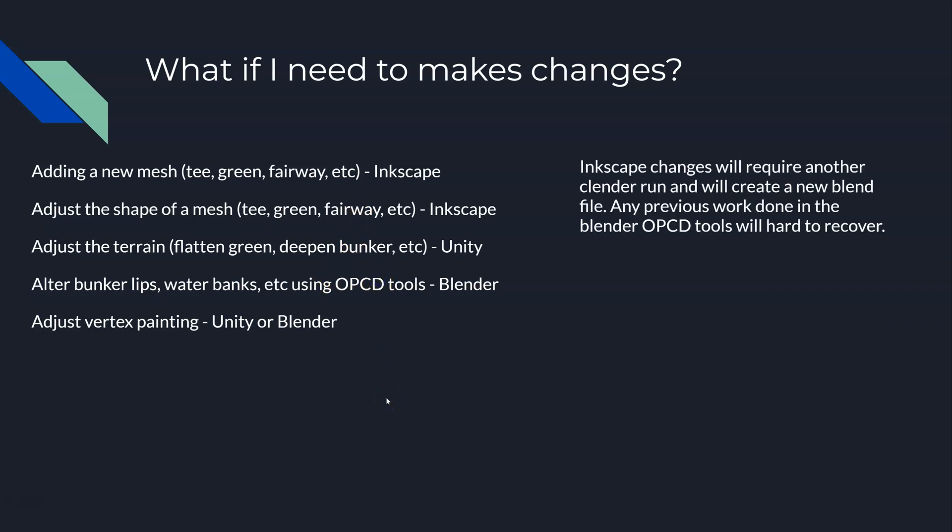So if you need to make changes in Inkscape — those first two use cases, either a new mesh or adjusting the shape of a mesh — you're going to have to run it all through the Blender pipeline again, and that will create a new blend file. A new blend file means new shapes, different from the blend file you've already been working on. So if you did anything in that previous blend file — like add a bridge, an object, changed your bunker lips, water lips, or did any vertex painting — they're now in two different files.